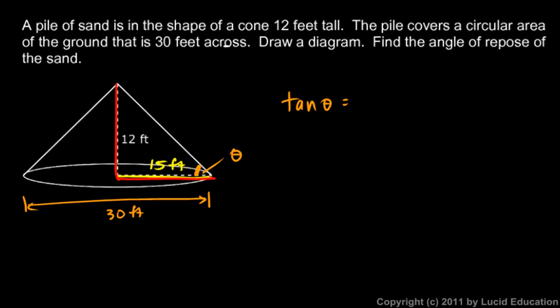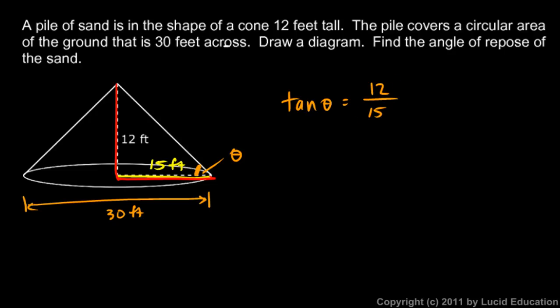The tangent of theta equals 12 feet over 15 feet. The units cancel out, so tangent of theta equals 12 over 15, as long as both measurements are in the same units — which they typically would be in a real-world problem.